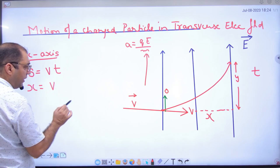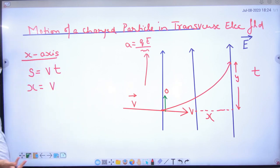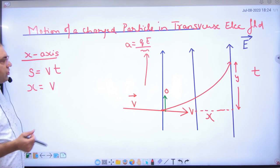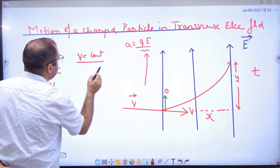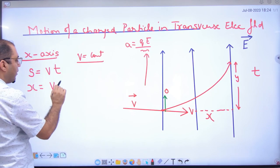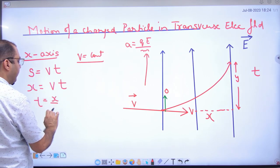On the x-axis, acceleration is not there because the electric field is only in y, nothing in x, so velocity will remain constant. And when velocity is constant, which equation applies? s equals vt. So x equals vt, and time will be x divided by v.